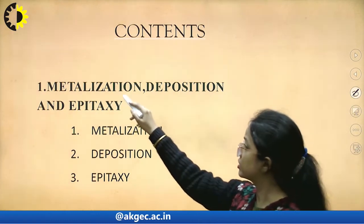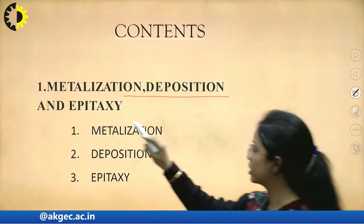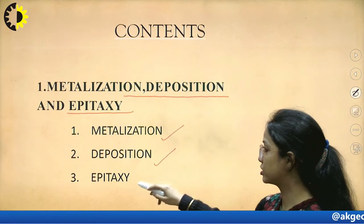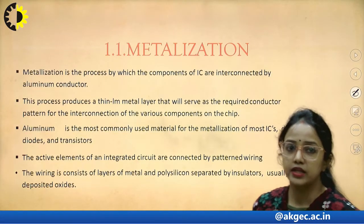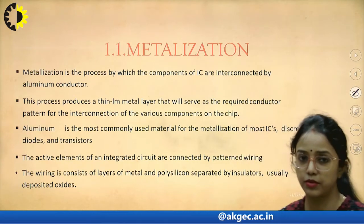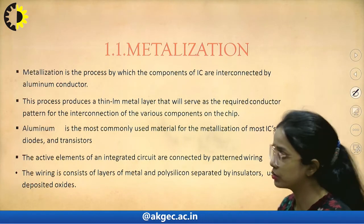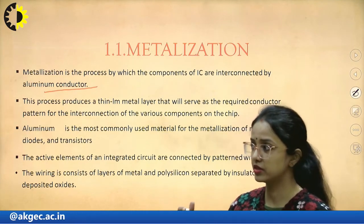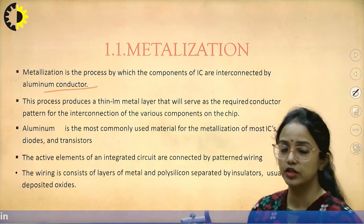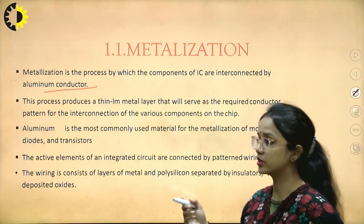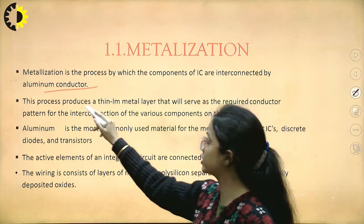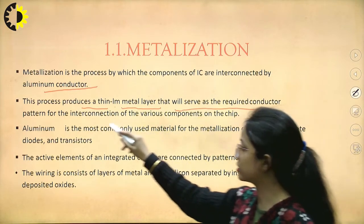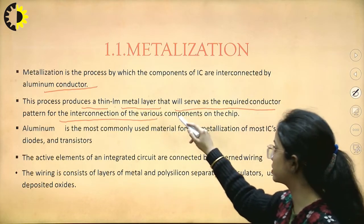We will study metallization, deposition, and epitaxy. Metallization is a process by which the components of an IC are interconnected by an aluminum conductor. The process produces a thin metal layer that serves as the required conductor pattern for interconnection of various components in the chip.